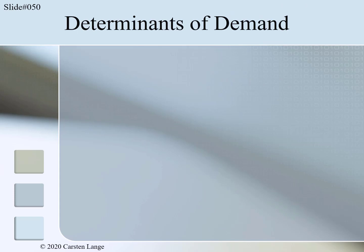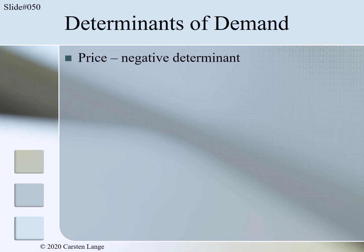I hope some of your determinants for the demand for upscale restaurant visits fit into the following categories. The first category — the most important determinant of demand — is the price. The higher the price, the lower the demanded quantity. Therefore, price is a negative determinant.